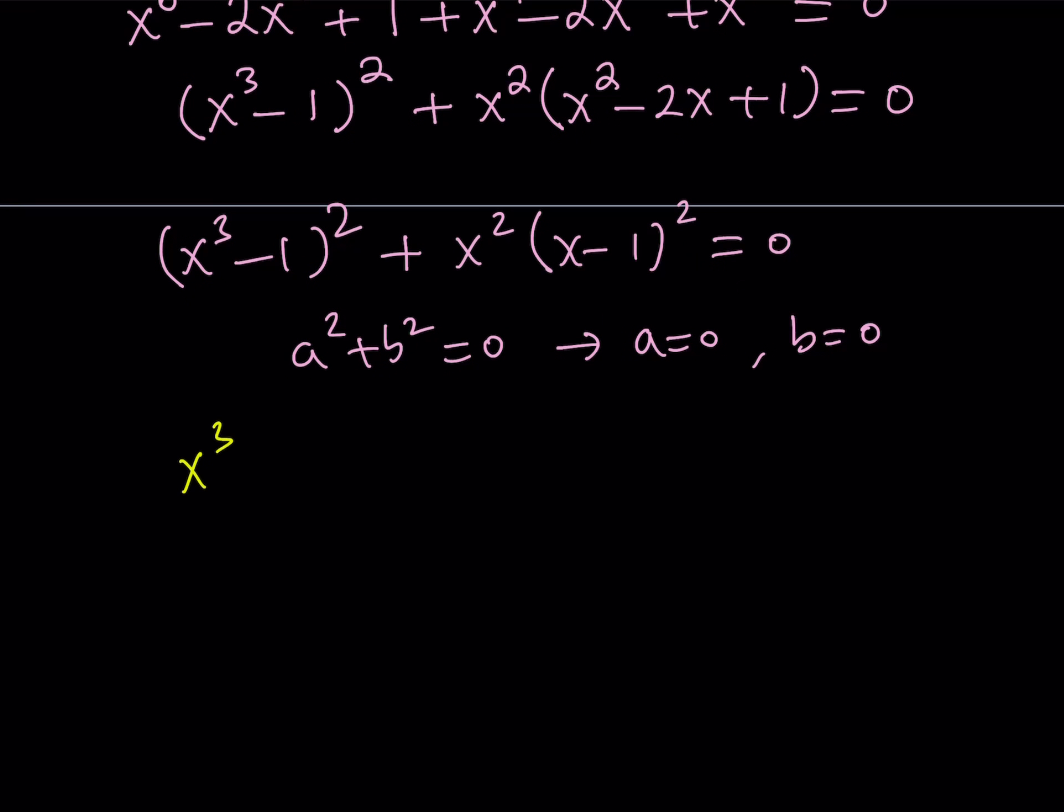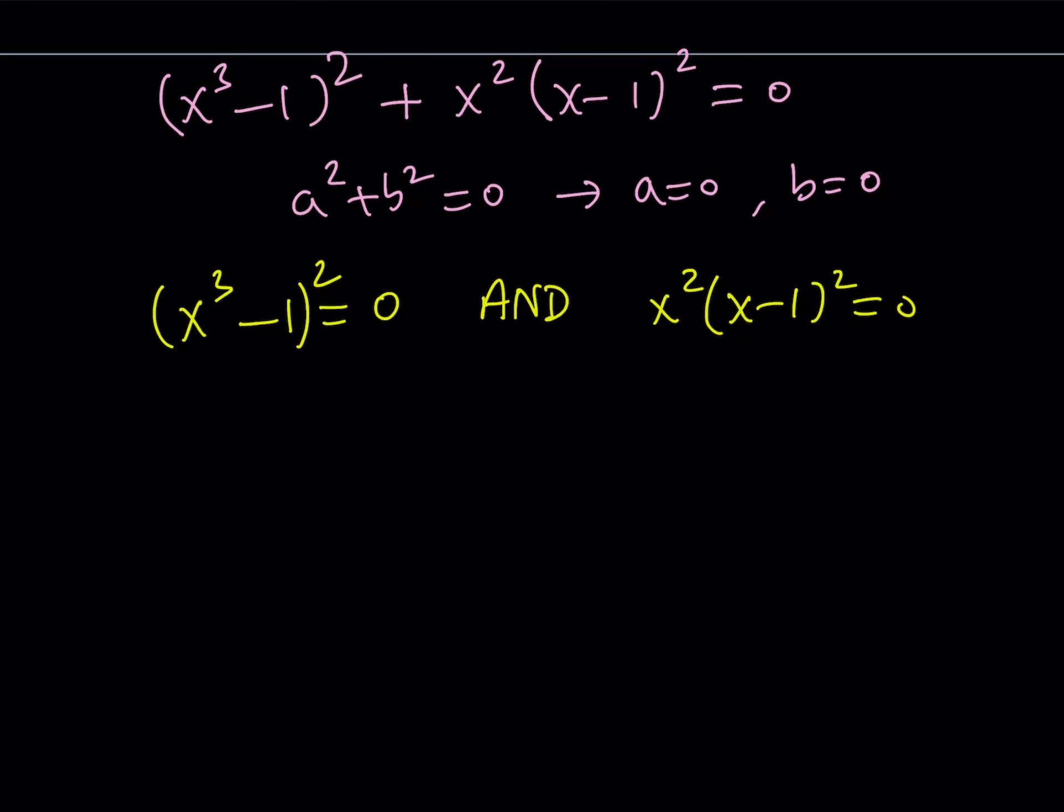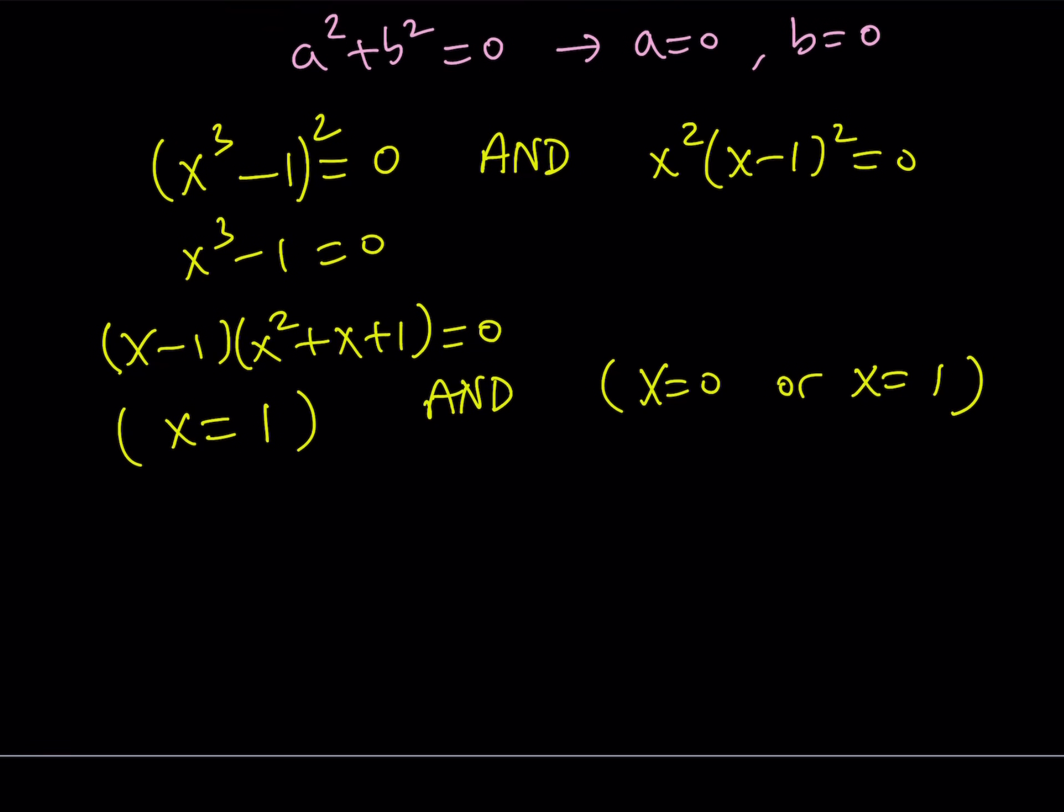So, x cubed minus 1 squared, which means x cubed minus 1, is equal to 0, and x squared times x minus 1 squared is equal to 0. I could probably write it with square as well to keep it kind of consistent. Now, this means that x cubed minus 1 is equal to 0, and obviously, this is factorable, but notice that this only has one real solution, because the other solution is going to give you the complex cube roots of 1. So, that's another story, but from here we get x equals 1 as a real value. The other equation gives us two solutions. x is either 0 or x is equal to 1. But since we have the and operator, this just means that the outcome from here is just going to be x equals 1.